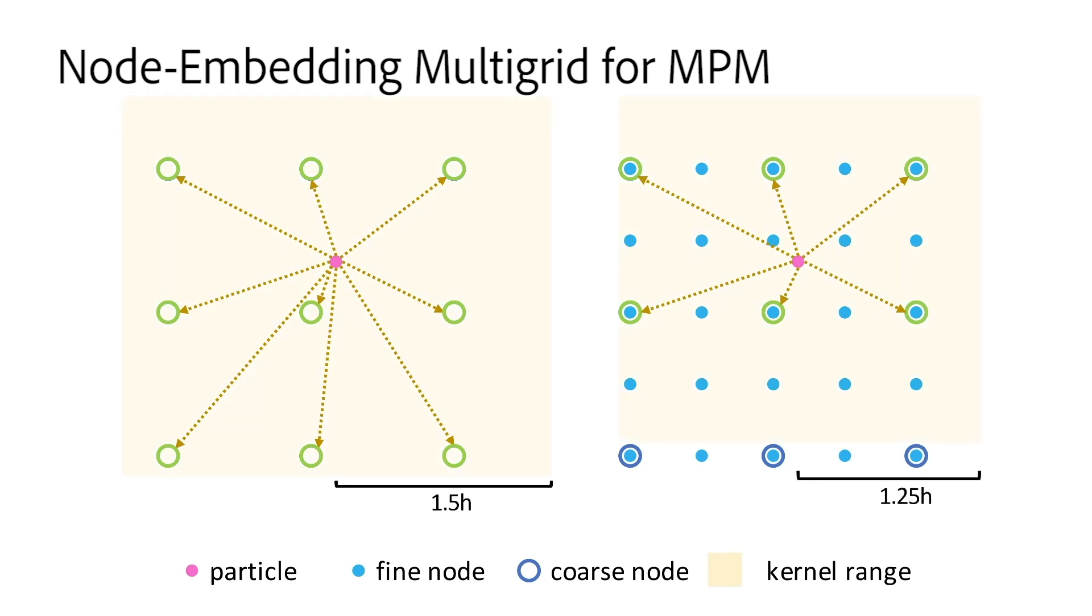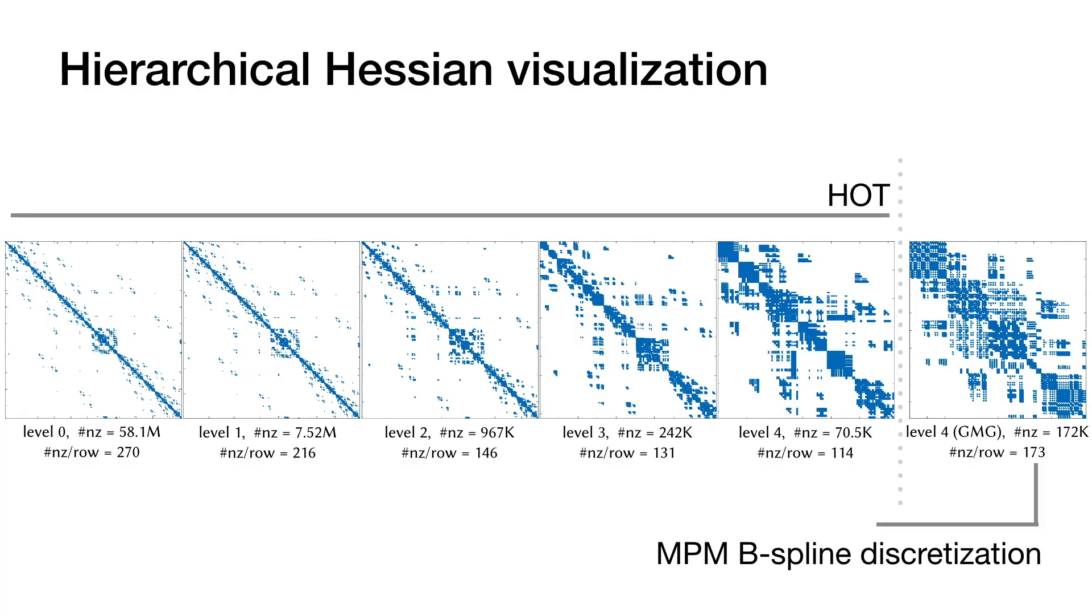As a result, as we see here, HOT delivers a much sparser system matrix at coarse levels, enabling highly efficient matrix-vector computations.